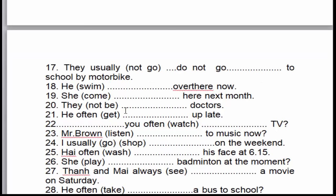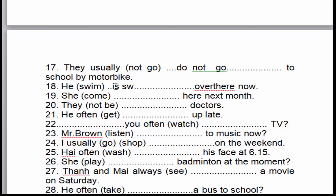Câu số 18: 'He is swimming over there now.' Anh ấy đang bơi ở đằng kia bây giờ. 'Now' là dấu hiệu nhận biết của thì hiện tại tiếp diễn — đang diễn ra. Chủ ngữ 'he' là số ít, cho nên chúng ta sử dụng to be là 'is', cộng động từ thêm '-ing' → 'is swimming'.